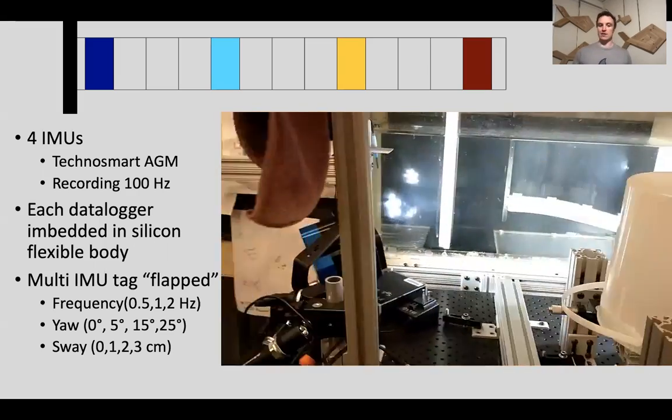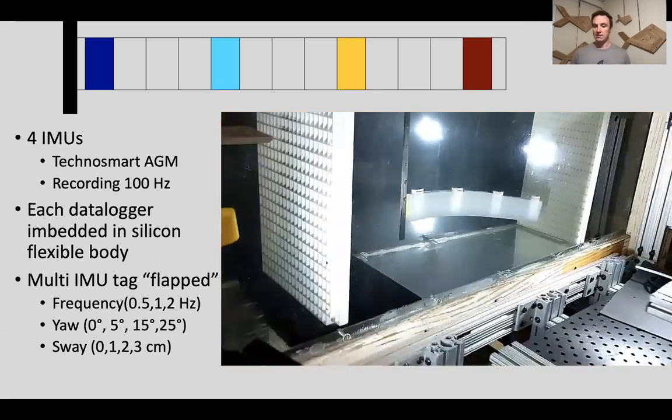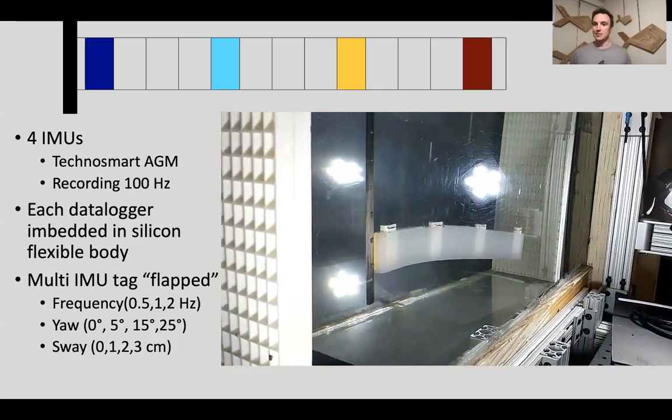By flapping it, you're really just trying to simulate fish-like movement, and I would change the frequency, the yaw, and the sway of this. I could then take all the data, post-process it, and estimate orientation.